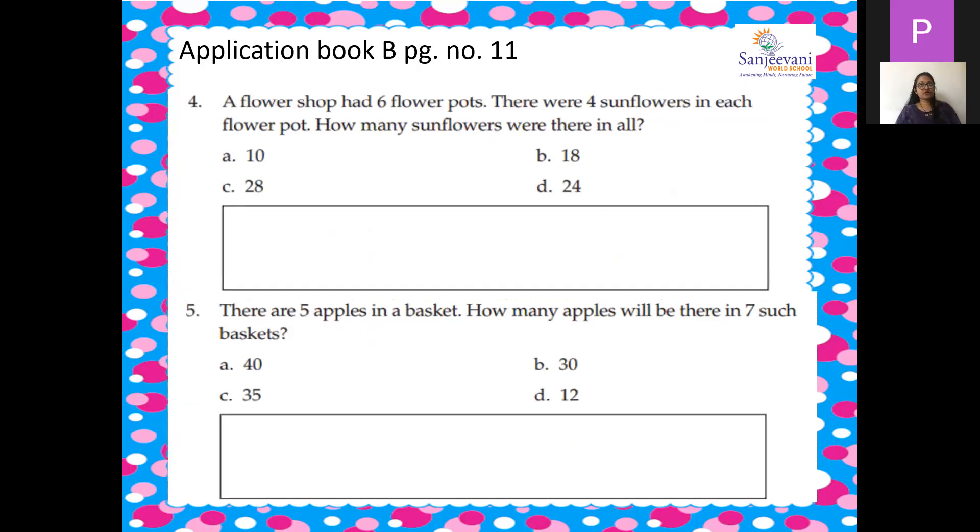A flower shop had 6 flower pots. There were 4 sunflowers in each pot. How many sunflowers were there in all? So how many pots were there? 6 into 4 is equal to 24 sunflowers. And then you will tick mark.